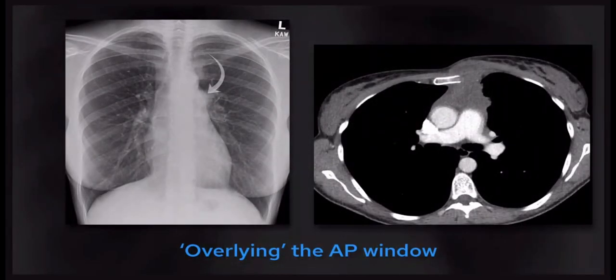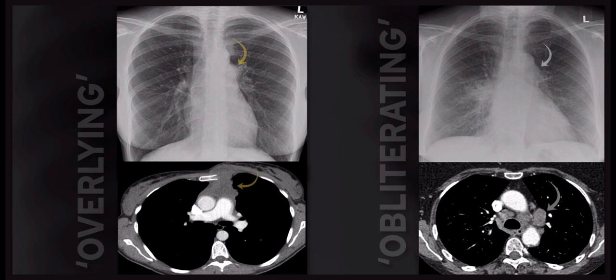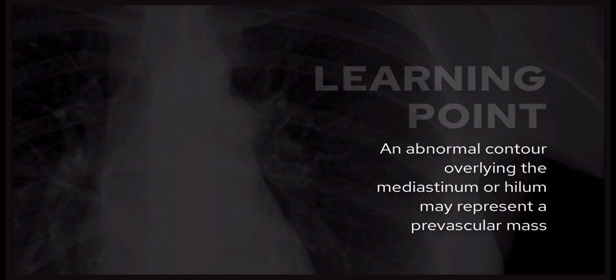Here's another similar case with a subtle density overlying the aortopulmonary window, this time in a female in her 30s. The CT shows a more ill-defined prevascular mass which invades the sternum and chest wall — this is a case of lymphoma. I want to point out the difference between a density overlying versus obliterating the AP window. On the left we have a prevascular mass in front of the aortopulmonary trunk, meaning we retain the contour of both. On the right, a right-sided hilar lung cancer shows an AP window abnormality where we can't make out the aorta or pulmonary trunk, telling us there is likely something in the visceral compartment — confirmed as enlarged AP window lymph nodes on CT. The key learning point: an abnormal contour overlying the mediastinum with no loss of silhouette sign may represent a prevascular mass.